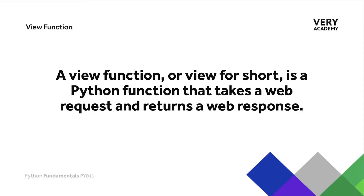Although we have already built our view and may have a general understanding of its purpose, a view function — described by Django, or a view for short — is a Python function that takes a web request and returns a web response. That's really the important part of developing a view in Django: our function takes a web request and returns a web response.